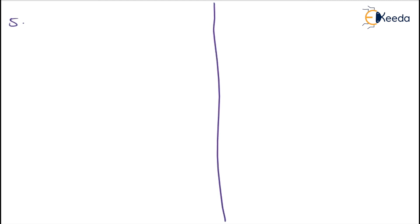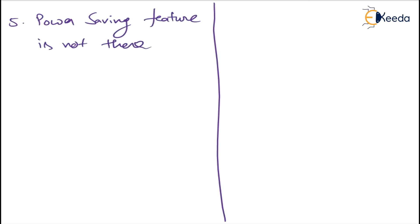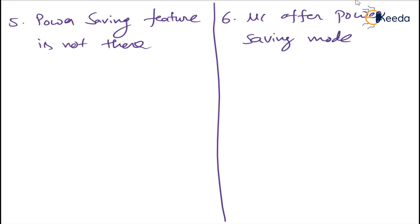Coming to the fifth point: most microprocessors do not have a power saving feature — the power saving feature is not there in computers. Whereas in microcontrollers, most offer a power saving mode. For example, in your mobile phone, if you are not using it, you press the power button and it sleeps. Similarly, microcontrollers have a sleep mode and wake-up mode. These modes are available in microcontrollers.